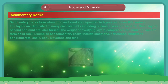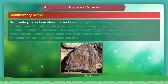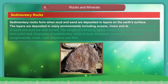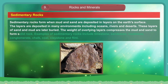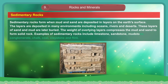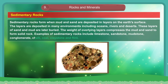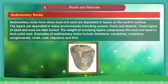Sedimentary Rocks. Sedimentary rocks form when mud and sand are deposited in layers on the earth's surface. The layers are deposited in many environments including oceans, rivers and deserts. These layers of sand and mud are later buried. The weight of overlying layers compresses the mud and sand to form solid rock. Examples of sedimentary rocks include limestone, sandstone, mudstone, conglomerate, chalk, coal, claystone and flint.